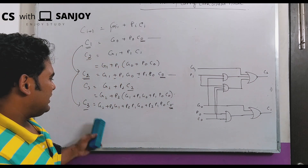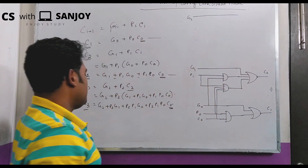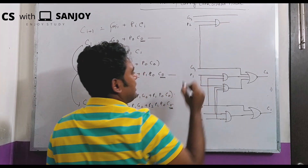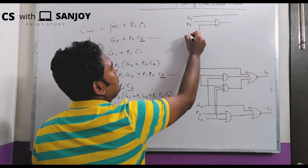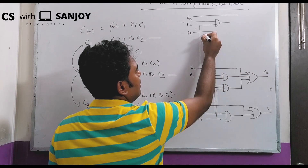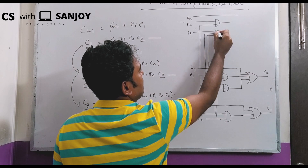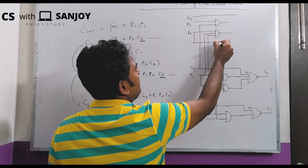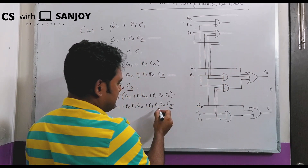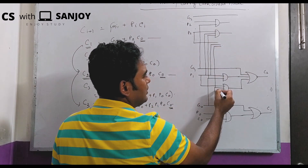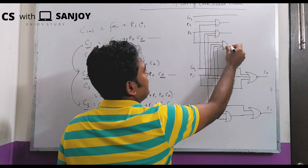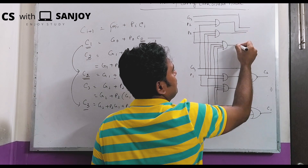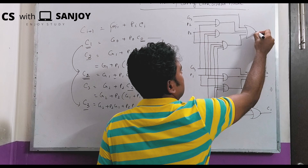For C3, we have: G2, then P2·G1 through an AND gate, then P2·P1·G0 through an AND gate, and finally P2·P1·P0·C0 through an AND gate. All four terms feed into an OR gate to produce C3. C1 is also available as an output.